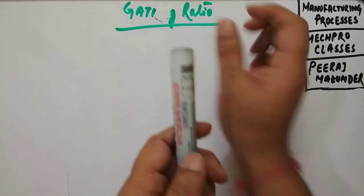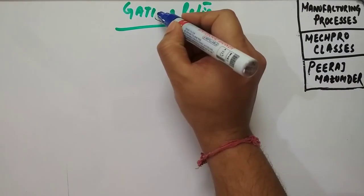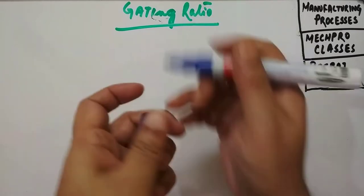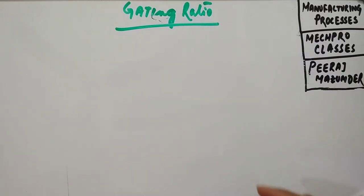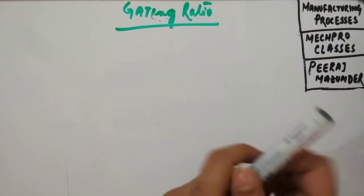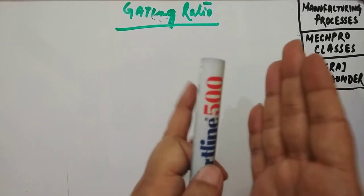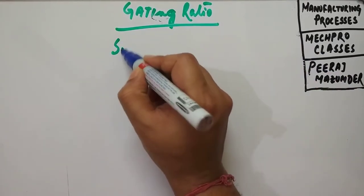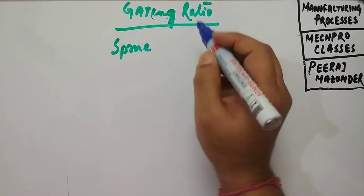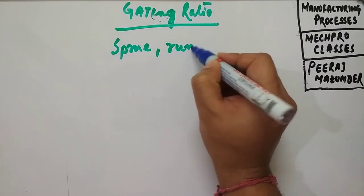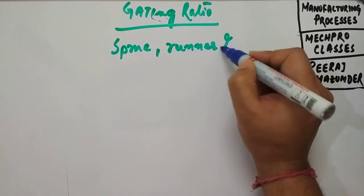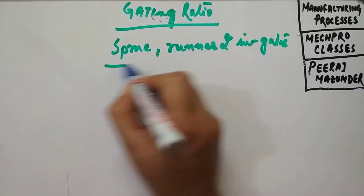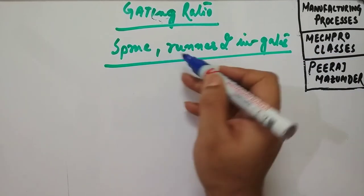So what is gating ratios? This is very important and you may expect questions from this gating ratio. Gating ratios refer to the proportion of the cross-sectional area between the sprue, runner and ingates. So this is the gating ratio between the proportion of the sprue, runner and the ingate.